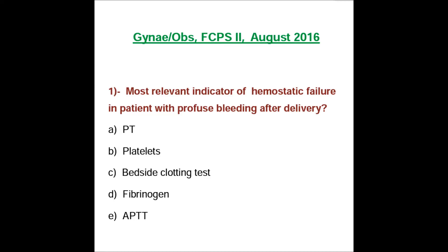Today I'm going to discuss August 2016 paper, question number one: the most relevant indicator of hemostatic failure in a patient with profuse bleeding. The answer is serum fibrinogen. If they ask for the quickest way, then it would be the bedside clotting test or clot fragility test. For a quicker test, otherwise the authentic indicator of hemostatic failure is serum fibrinogen.